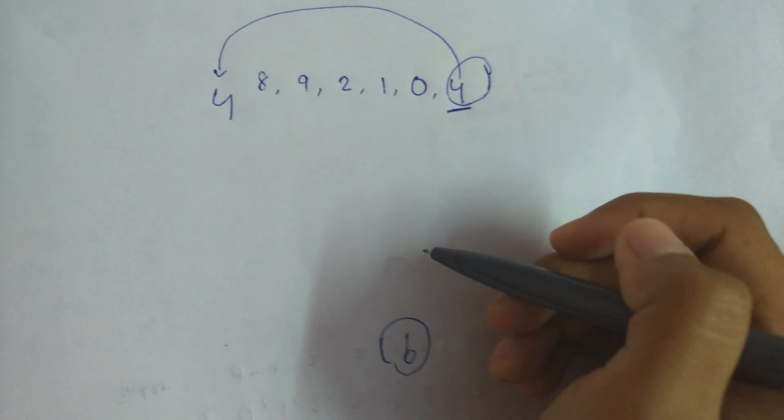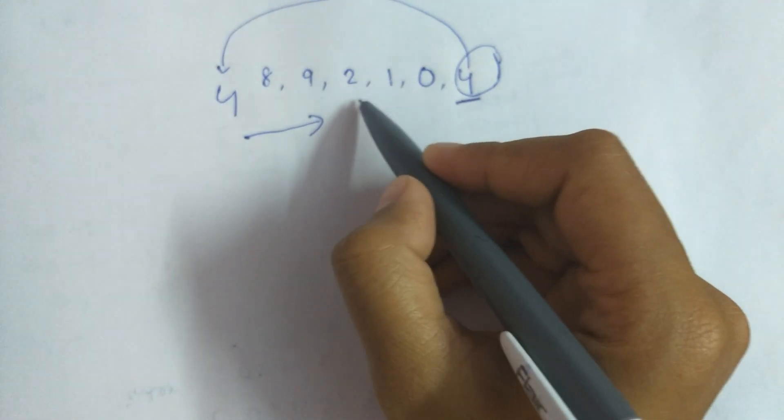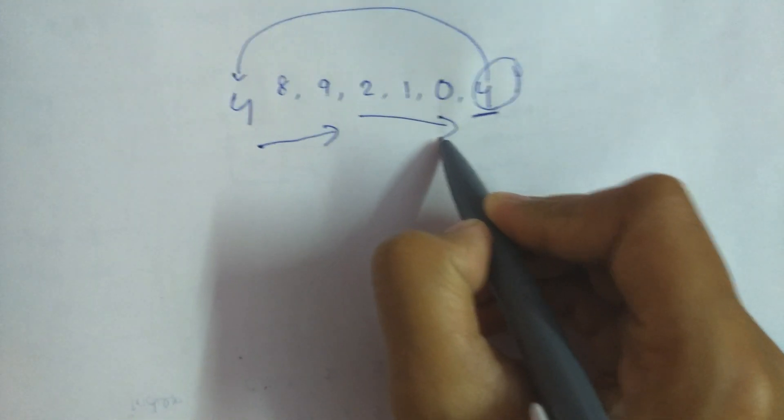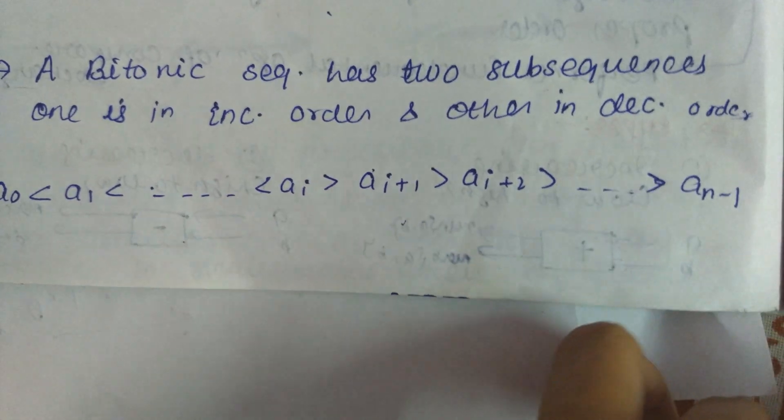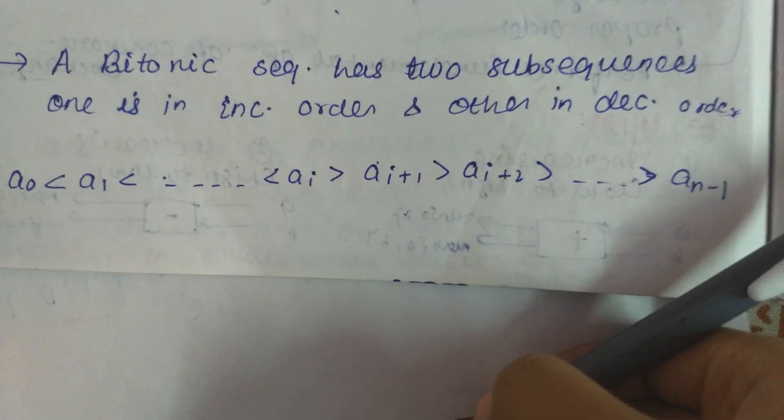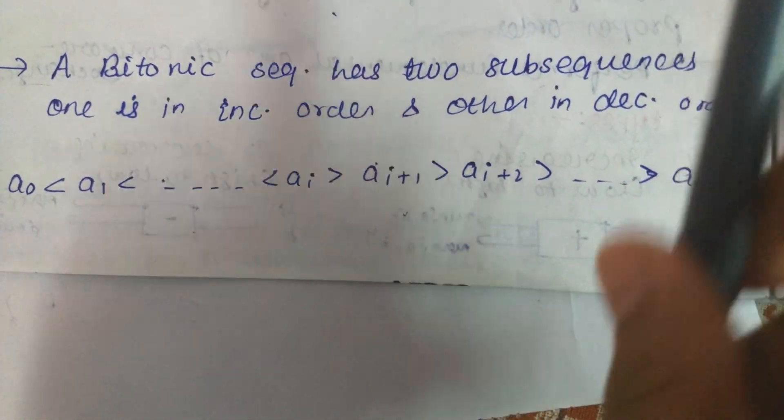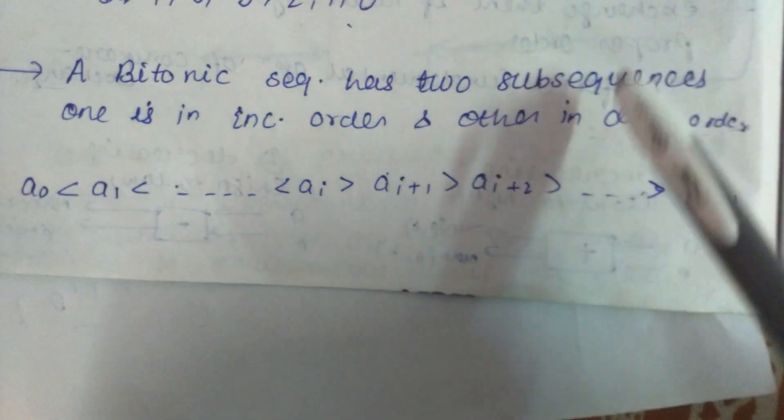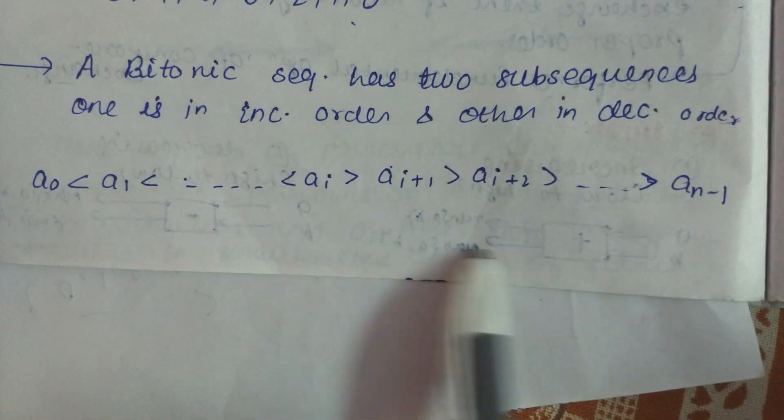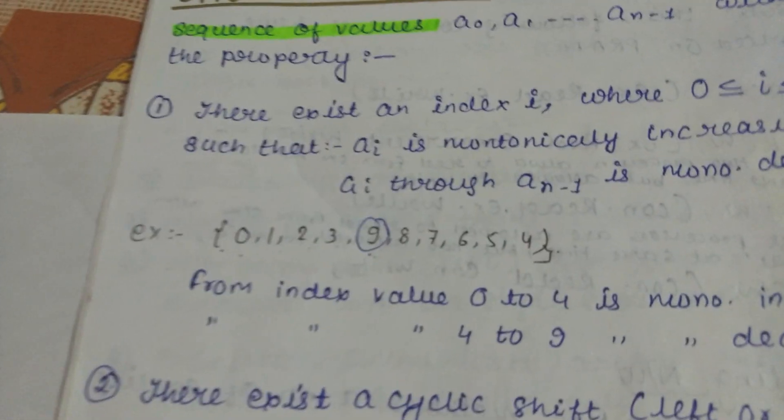So now it is monotonically increasing and from here it is monotonically decreasing, so our first property is satisfied now. So those are the two properties of a bitonic sequence. The bitonic sequence has two subsequences - one is monotonically increasing and the other one is decreasing. This is how it looks. Hope you liked the video.